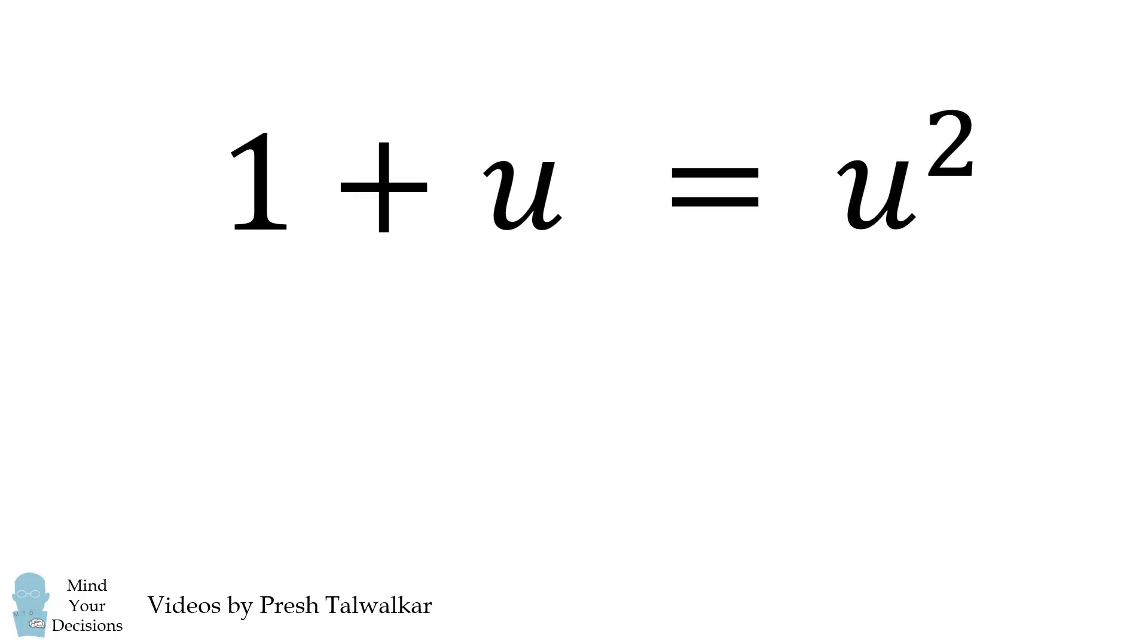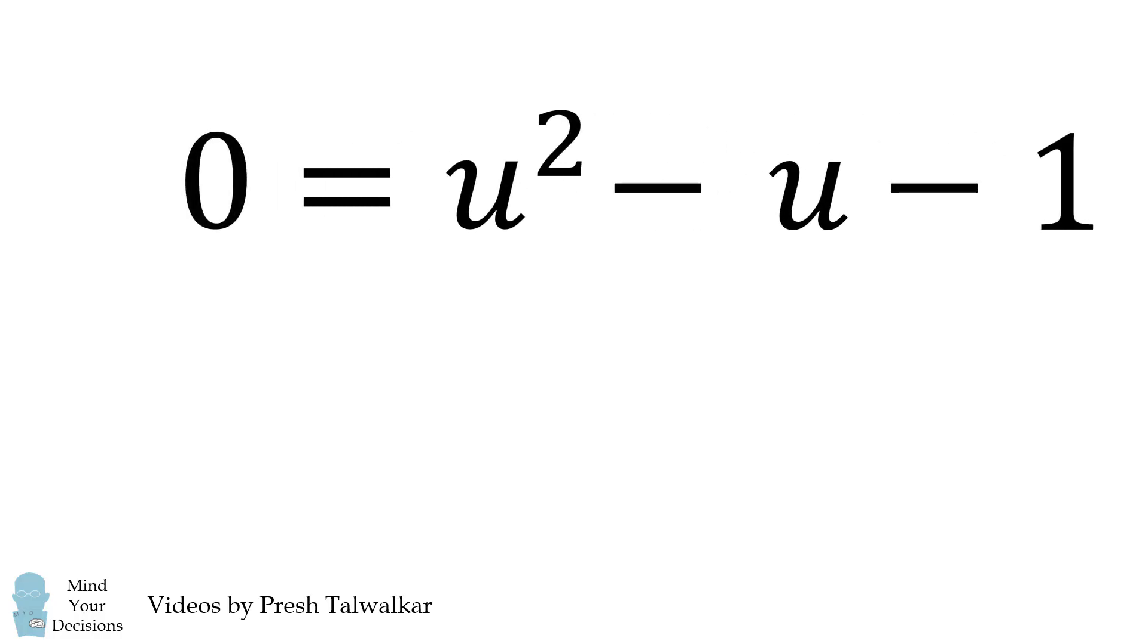We thus have a quadratic equation. 1 plus u is equal to u squared. We'll move the terms to the right-hand side, so we get 0 is equal to u squared minus u minus 1. Since u is equal to 3 over 2 all raised to the power of x, we need u to be greater than 0, because 3 halves raised to the power of x will be a positive term.